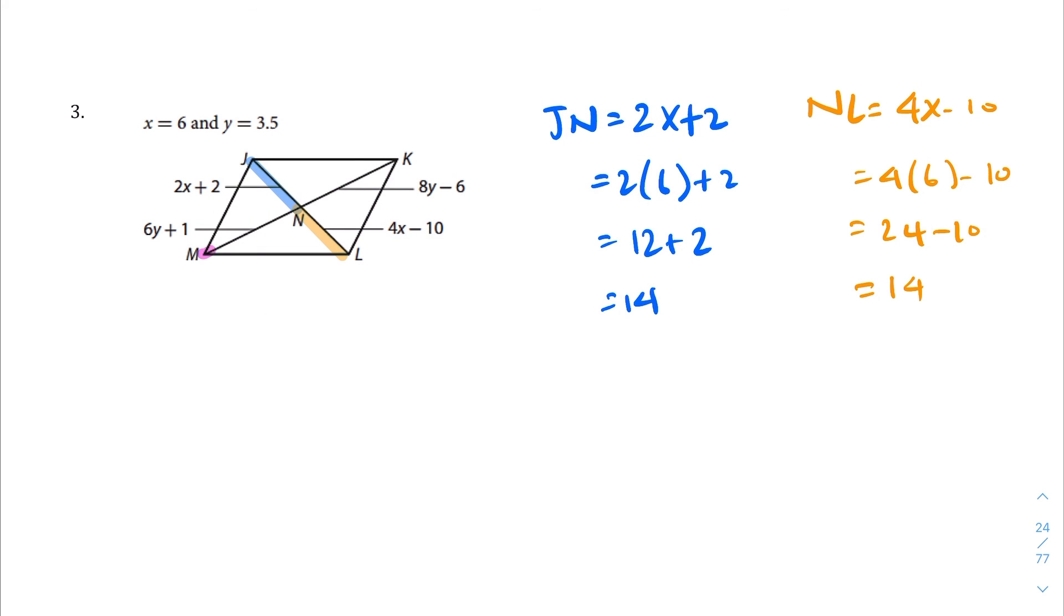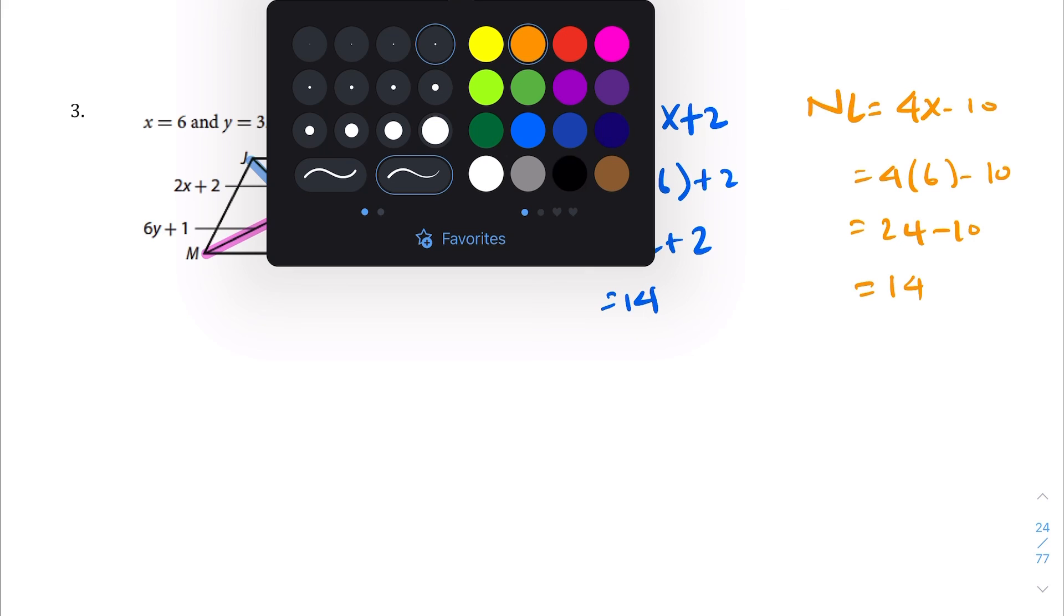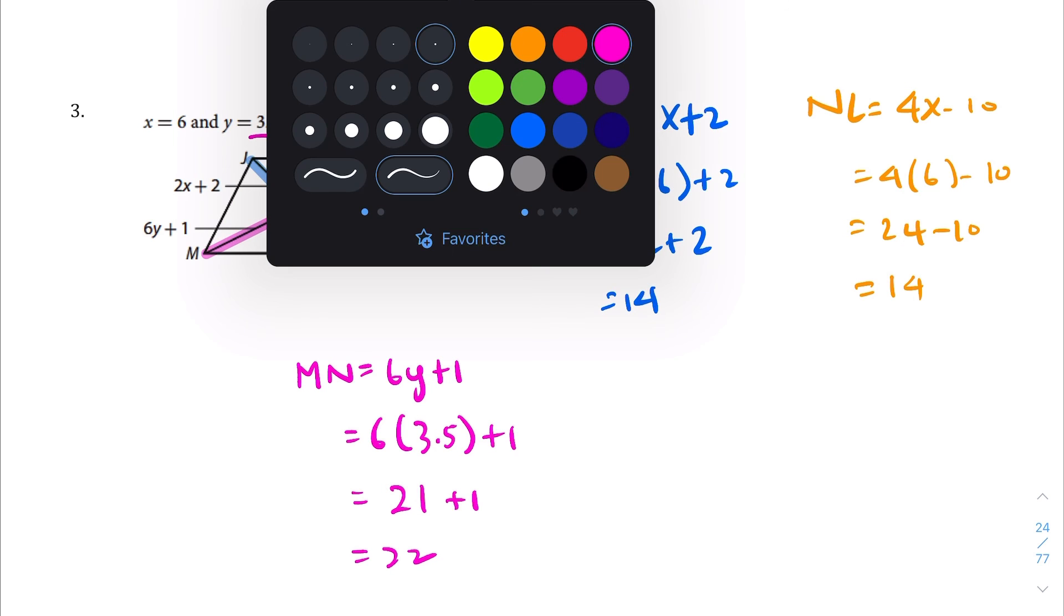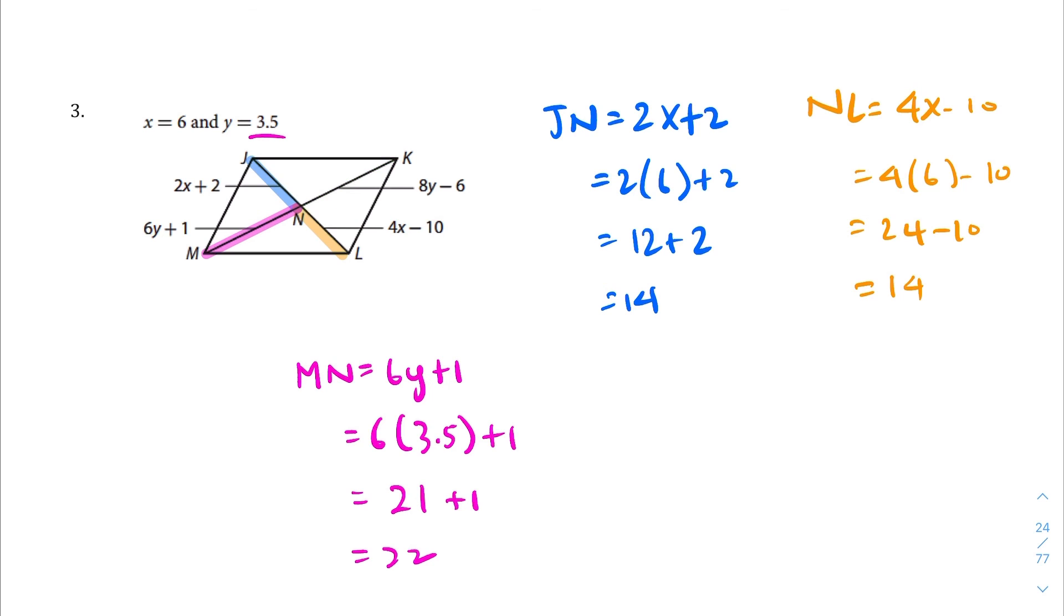And let's change the color here, let's make this one pink, M to N here, right here. I want to give me a straight line, there you go. All right, MN is 6y plus 1, 6 times y, 3.5 plus 1, and again where are we getting that, it's bringing it right there. Let's see, 3.5 times 6, our calculator tells me it's 21 plus 1, so 22.